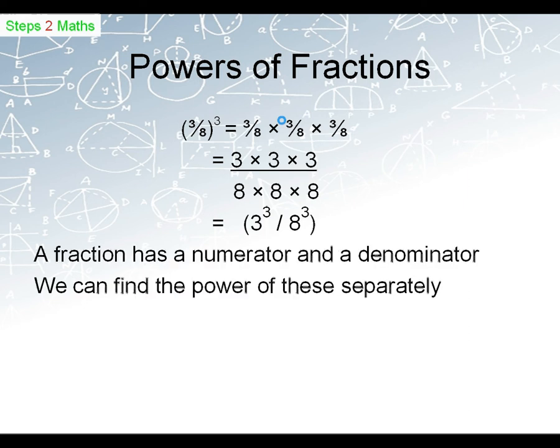So when we have a fraction which has a numerator and a denominator, we can find the power of these separately. So if we've got 3 eighths to the power of 3, we can find that separately, we can say 3 to the power of 3 over 8 to the power of 3.